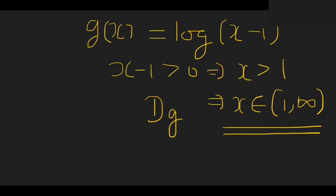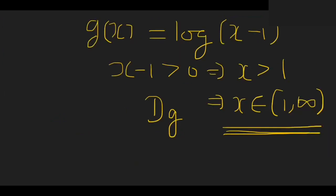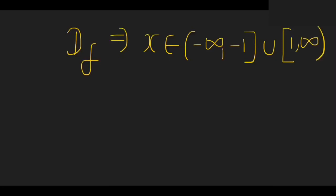So previously I found the domain of f, and here I found the domain of g. To summarize: domain of f is x belongs to minus infinity to minus 1 union 1 to infinity, and domain of g is x belongs to 1 to infinity.